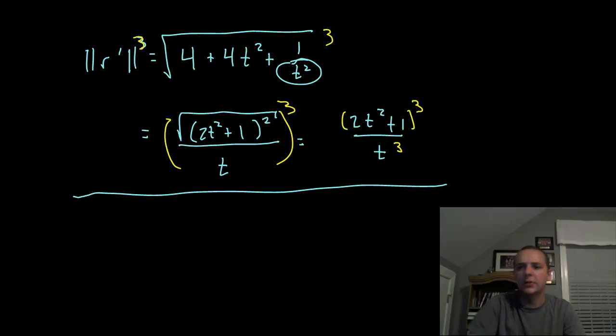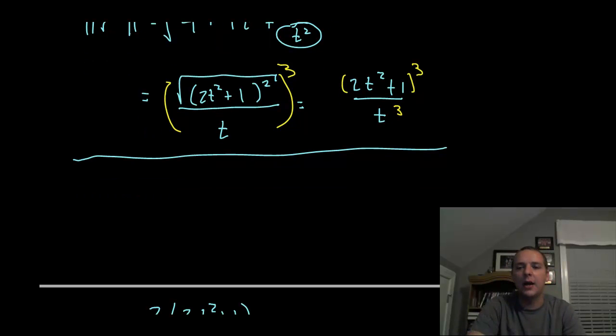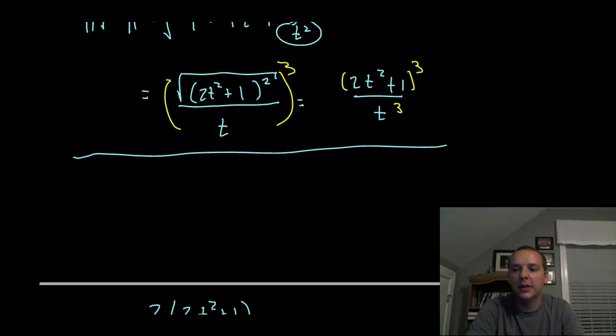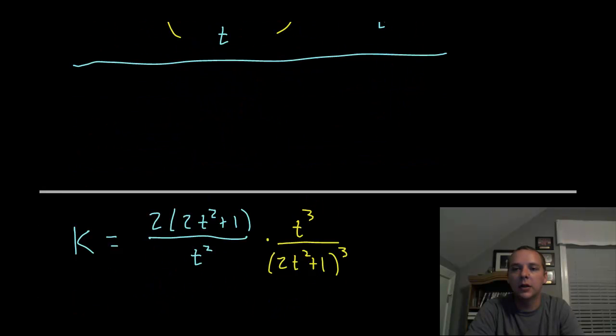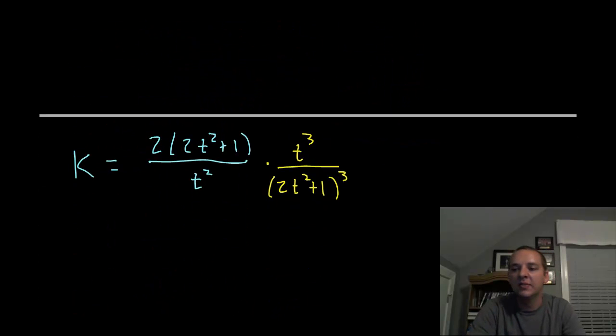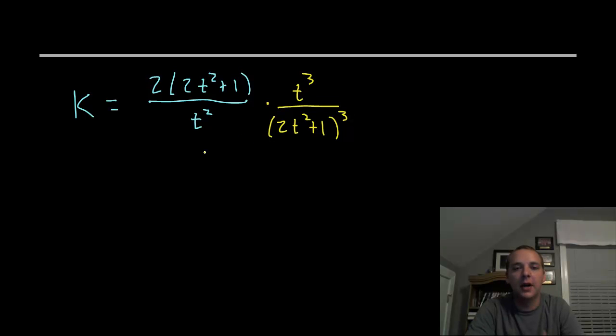Since that's a fraction rather than dividing by that fraction, let's multiply by this guy's reciprocal to make the algebra a little better. Times t cubed over 2t squared plus 1 quantity cubed. So I took the reciprocal so I didn't have to divide by another fraction, and we're pretty much done.